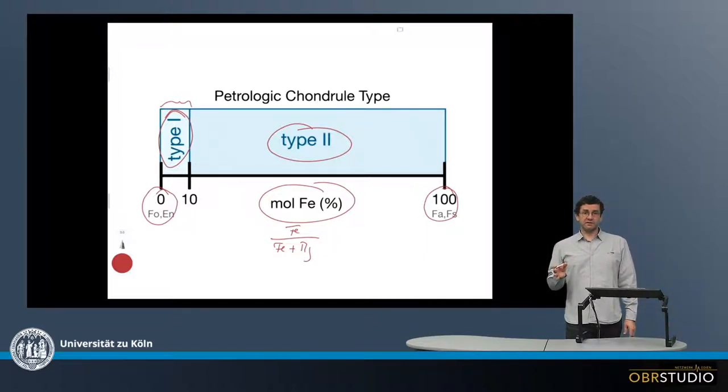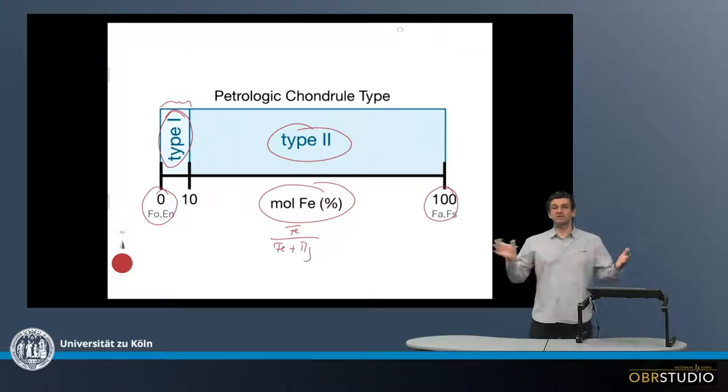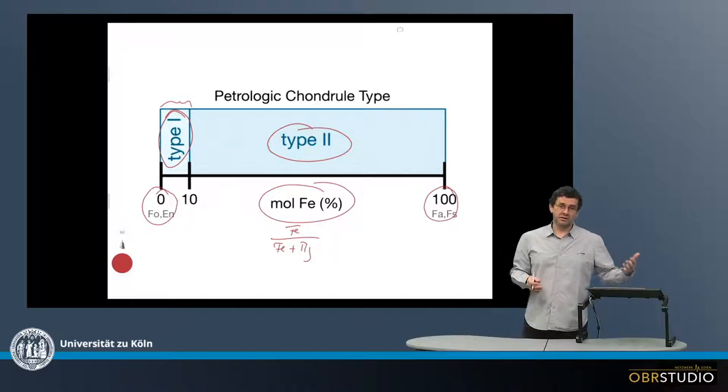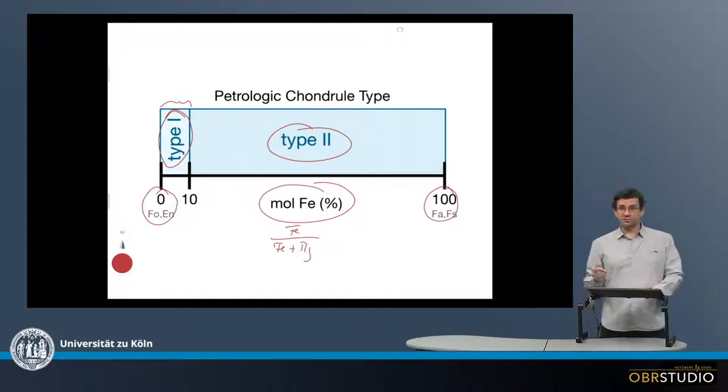In enstatite chondrites, there are almost no type 2 chondrules. They are highly reduced, which means they contain almost exclusively type 1 chondrules, in which the forsterite and enstatite is almost pure.